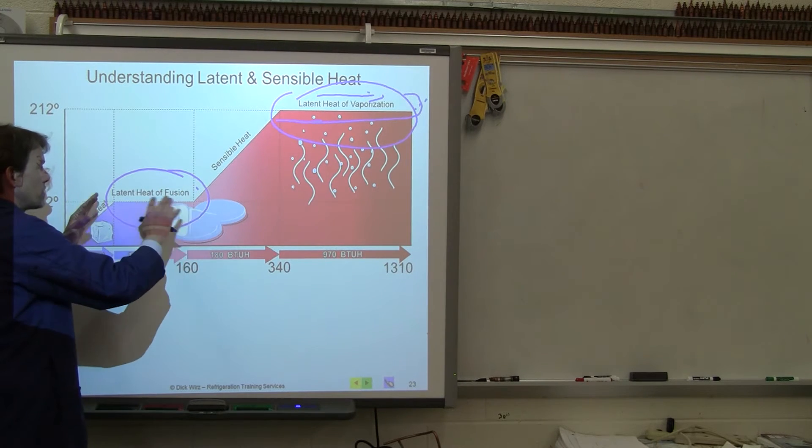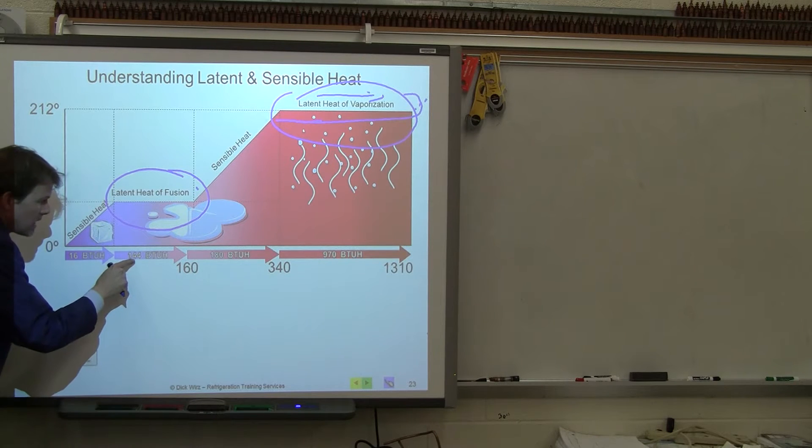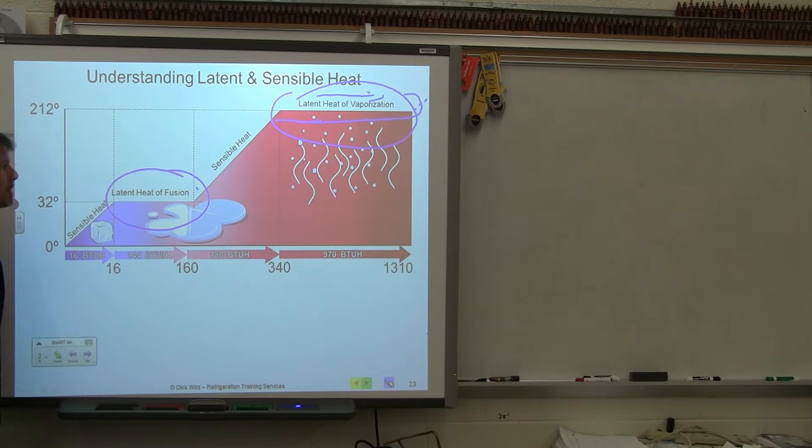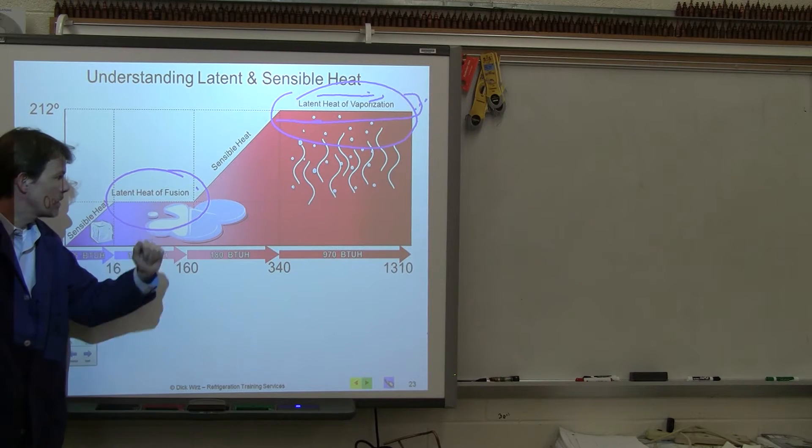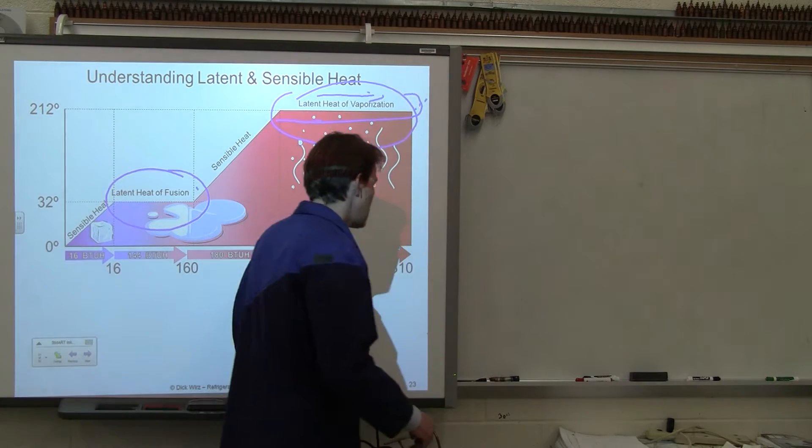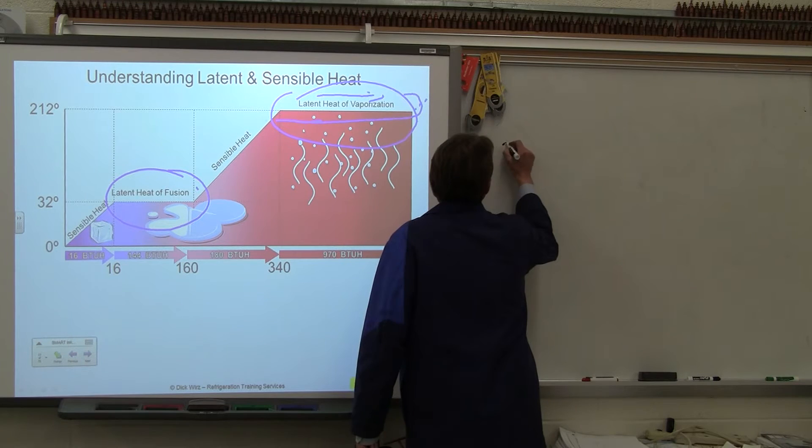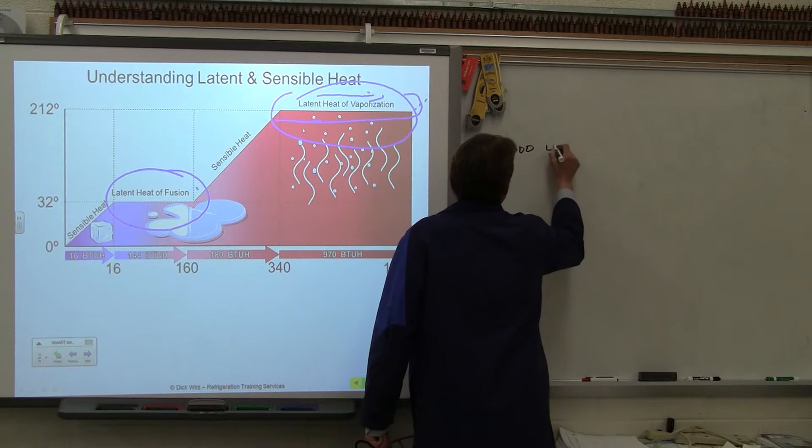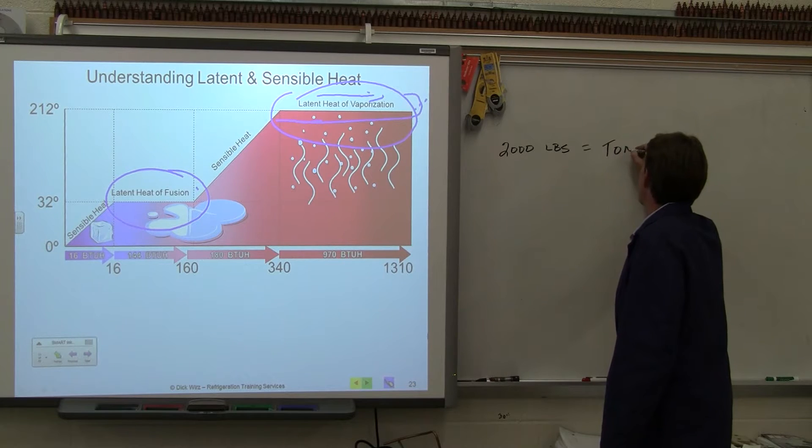All this is at sea level, standard pressure, standard conditions. At 32 degrees, it calculated it takes 144 BTUs worth of heat to melt a 1 pound block of ice from 32 degree solid to 32 degree liquid. In tonnage, we're normally dealing with, instead of 1 pound, we're dealing with 2,000 pounds of the substance, which is equal to a ton.